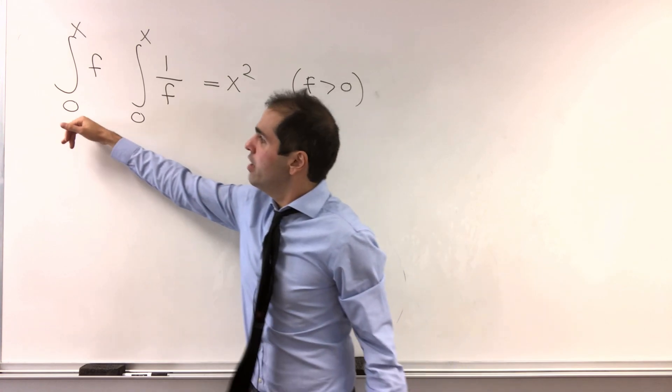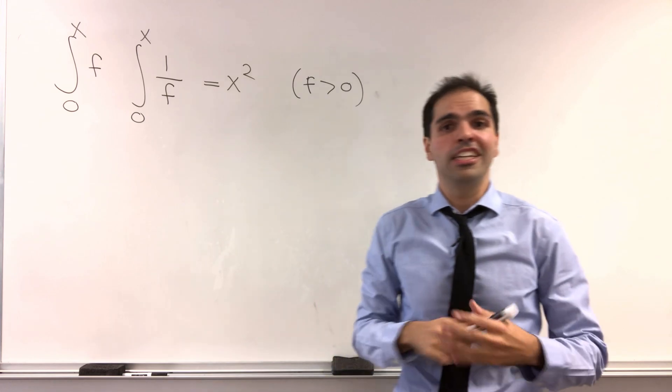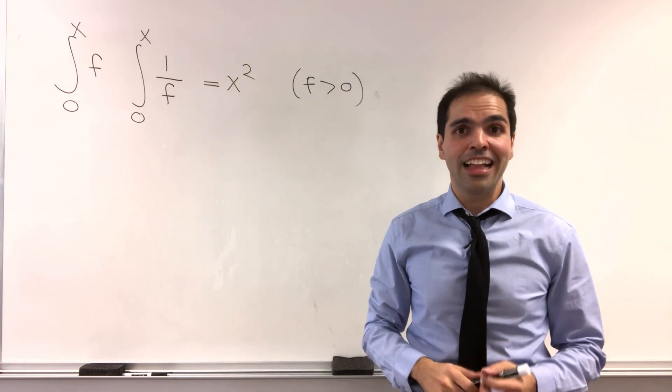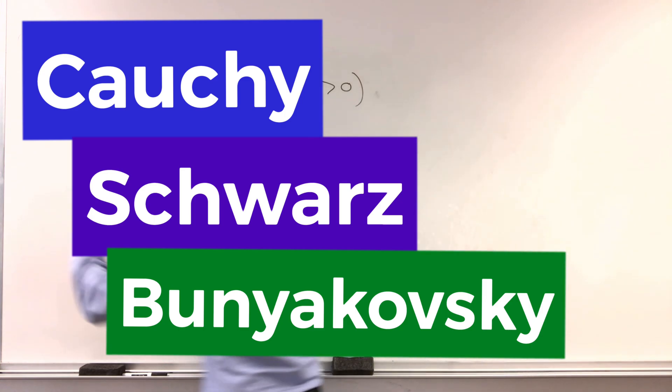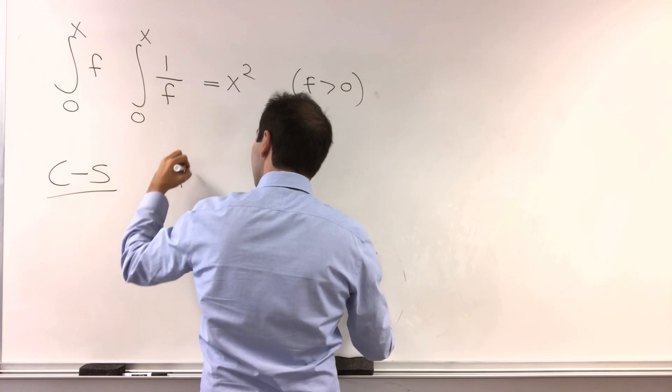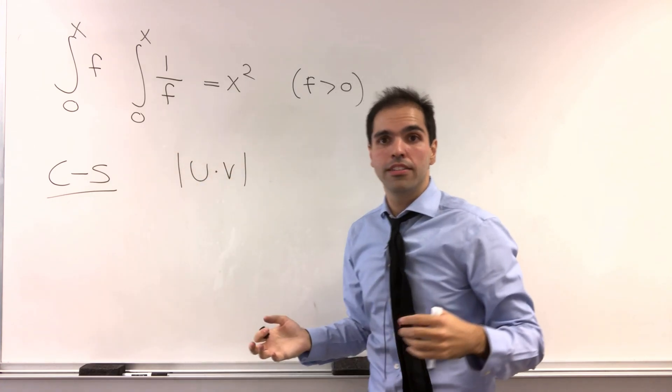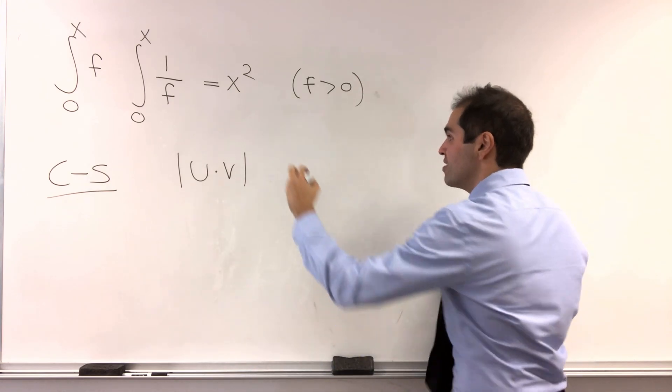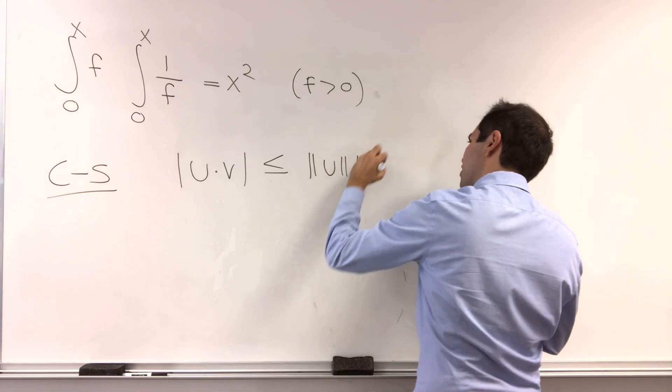Now, whenever you see a product of things, it should remind you of a famous inequality in linear algebra and analysis called the Cauchy-Schwarz-Bunyakovsky inequality. And what does Cauchy-Schwarz say? It says that the absolute value of u dotted v, where u and v are vectors, is always less than or equal to length of u times length of v.